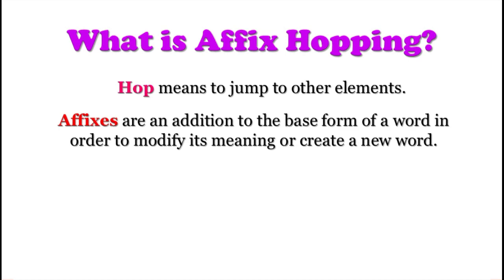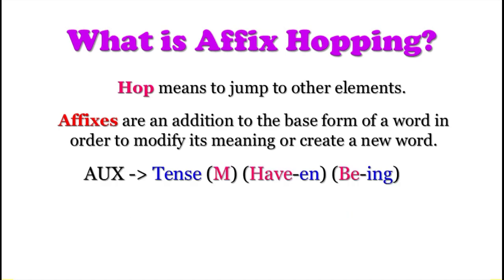Some affixes will jump to other elements to become part of them. As mentioned in the phrase structure grammar video, the maximal projection of the auxiliary — or AUX — is: Tense, Modal, have+EN, and be+ING. Tense is the only obligatory element; all other elements are optional. Tense is an addition representing present or past.